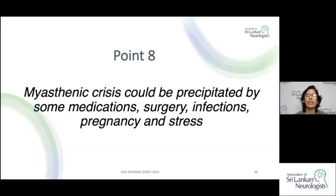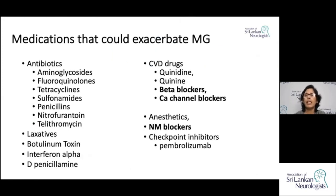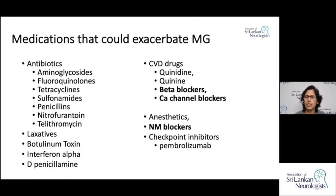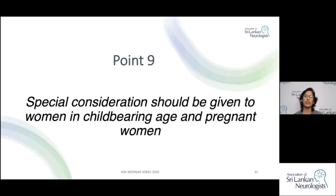Point eight: myasthenic crisis can be precipitated by some medications, surgery, infections, pregnancy, and stress. Drugs to be aware of include: aminoglycosides, fluoroquinolones, beta blockers, calcium channel blockers, botulinum toxin, and neuromuscular blockers — all can bring on symptoms. Stresses and infections can also precipitate symptoms in patients with Myasthenia Gravis.